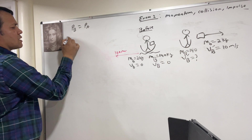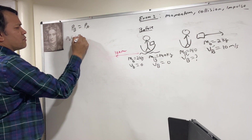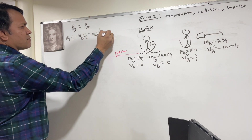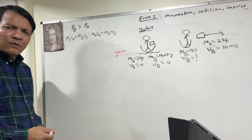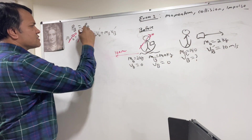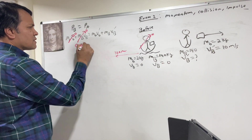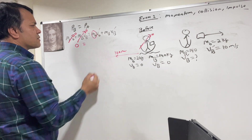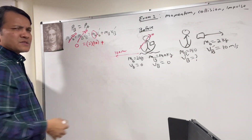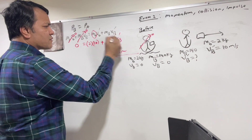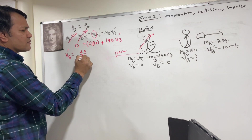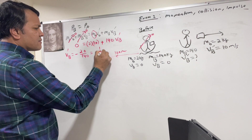So: M_book × V_book + M_boat × V_boat = M_book × V_book' + M_boat × V_boat'. Before, the boat is at rest (0) and the book is at rest (0), so momentum before is 0. After: mass of the book is 2 and velocity of the book is 10, plus mass of the boat is 140 and velocity of the boat you want to find. So velocity of the boat is −20/140 = negative 1/7 meter per second.